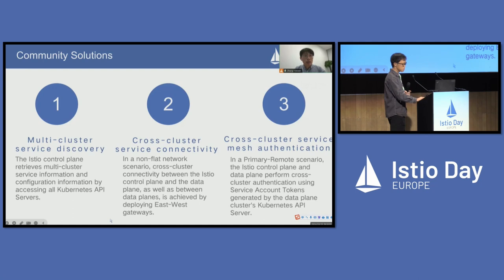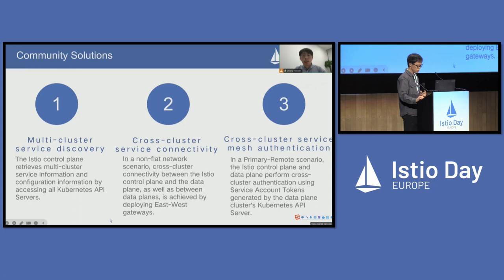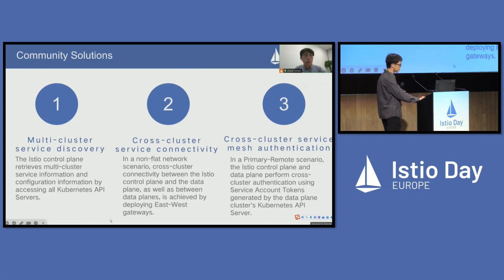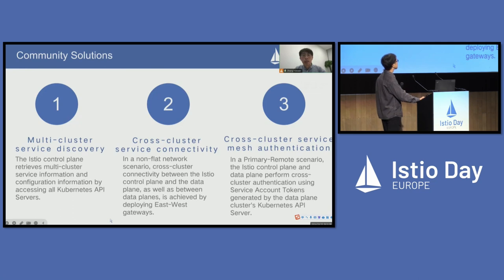For cross-cluster service connectivity, in non-flat network scenarios, cross-cluster connectivity between the Istio control plane and data plane, as well as between data planes, is achieved by deploying east-west gateways. For cross-cluster service mesh authentication, in a primary-remote scenario, the Istio control plane performs cross-cluster authentication using service account tokens generated by the data plane cluster's Kubernetes API server.